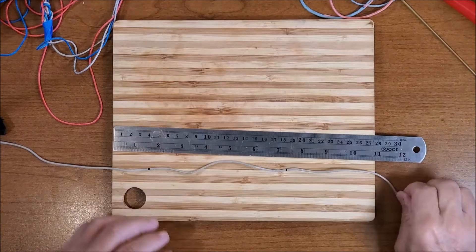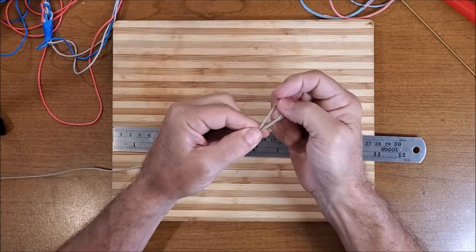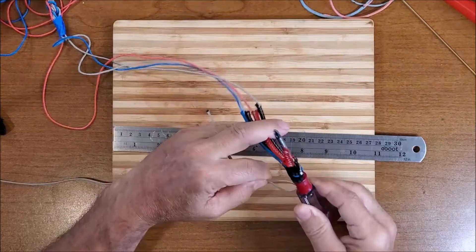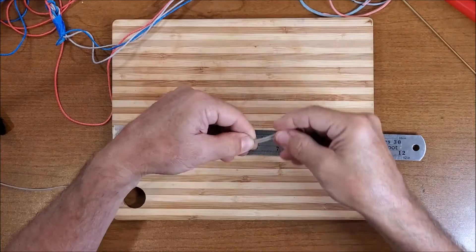So now what we're going to do is we're going to put an eye splice in the end of these lines like this. And we're going to end up with a loop that we can attach to our lines. And what are we replacing? We're replacing two loops and two knots. So if you start off with four loops, you can always just turn a loop into a knot very easily. I'm going to show you how to do that.